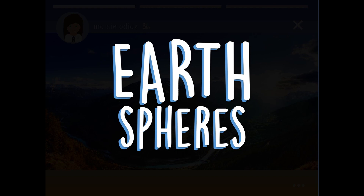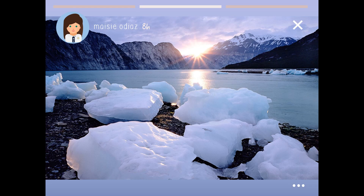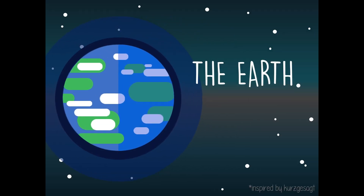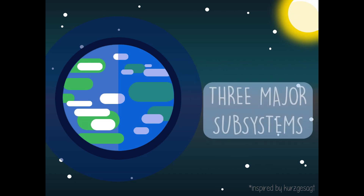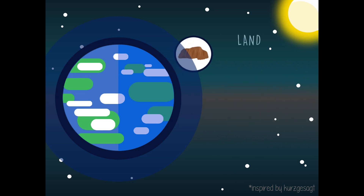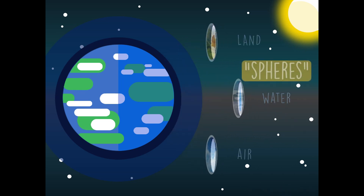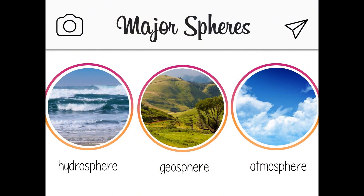Have you ever been in awe while seeing this, this, or this? These are the absolute wonders that we have in our planet, the planet Earth. Earth is the third planet from the sun and the only planet that harbors life. Our planet comprises three major subsystems — land, water, and air. These subsystems are called spheres. The three major spheres are specifically the geosphere, hydrosphere, and atmosphere.